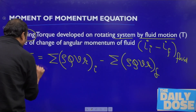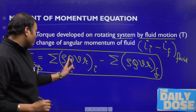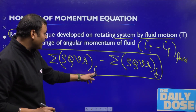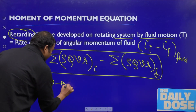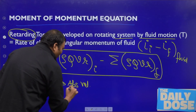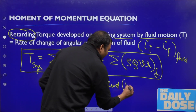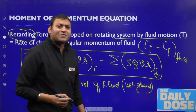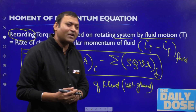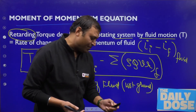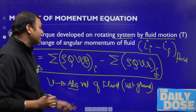Rho is the density of the fluid, Q is the discharge entering or leaving the control volume, and V is the absolute velocity of the fluid — that is, velocity with respect to the ground. A change in absolute velocity of the fluid gives rise to a change in angular momentum, which develops torque on the rotating arm. V is the absolute velocity and R is the radial distance from the axis of rotation.